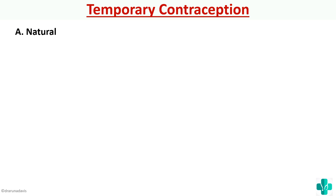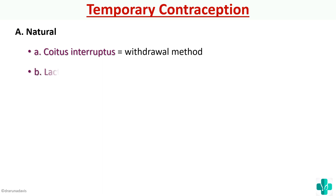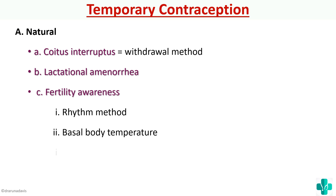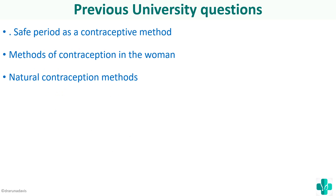In summary, the natural methods of contraception covered in this video are: coitus interruptus (withdrawal method), lactational amenorrhea, and fertility awareness by three methods — rhythm method, basal body temperature, and cervical mucus method. University questions from this topic include 'safe period as a contraceptive method' (referring to the rhythm method) and 'methods of contraception in women,' of which natural methods can be asked as a short note.